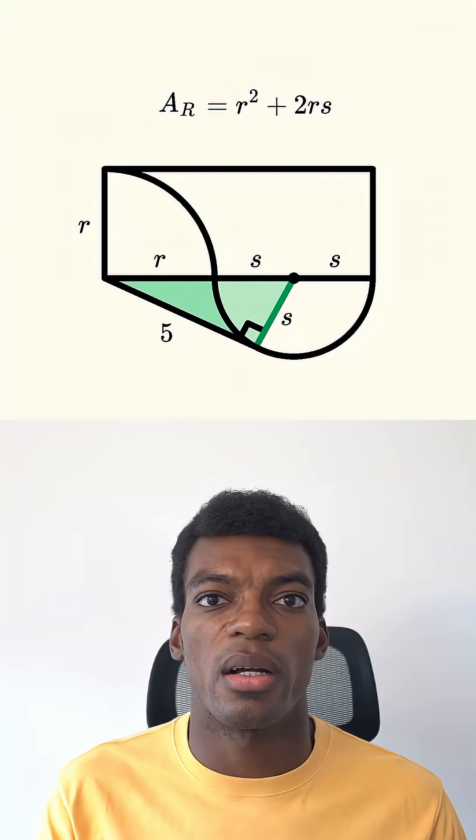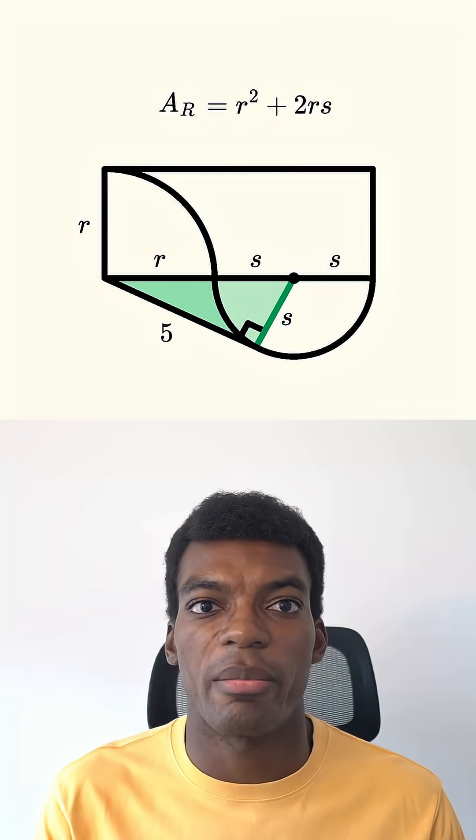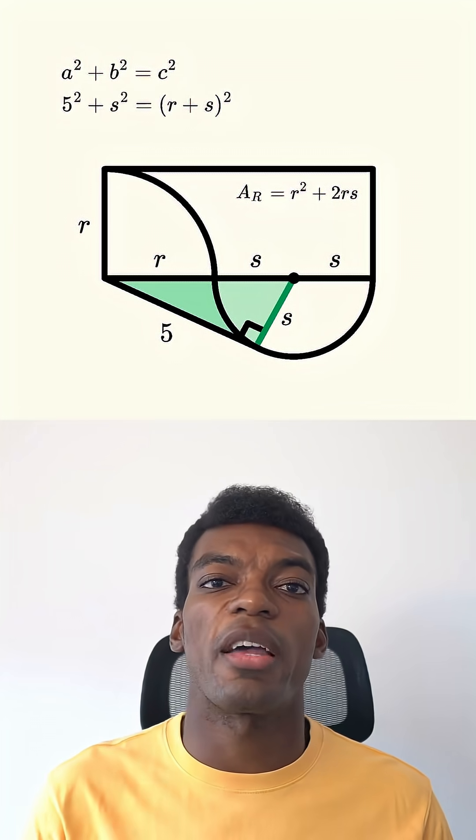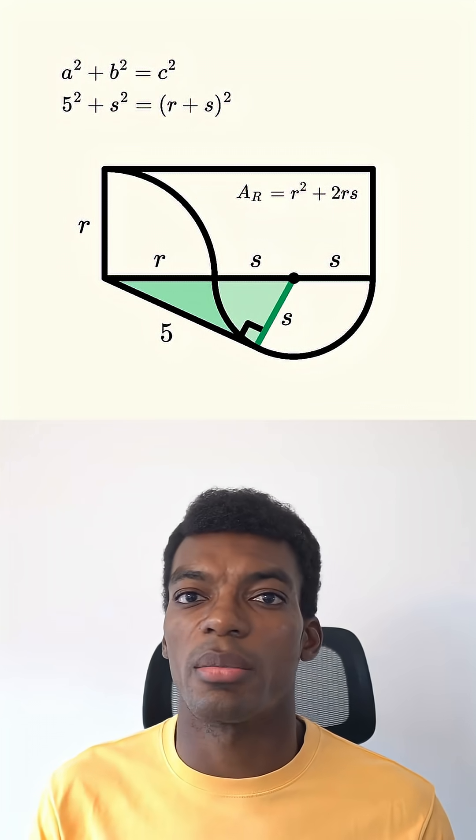We know the legs of the triangle are 5 and s, and the hypotenuse is r plus s. So let's plug that into the Pythagorean theorem. We get 5 squared plus s squared is equal to r plus s squared.